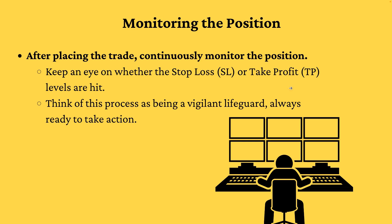Once we place the trade, we continuously monitor the position to see if our stop loss or take profit levels are hit. This is akin to being a vigilant lifeguard, always ready to take action. If Bitcoin quickly moves up to $32,025, our take profit is hit and we close the trade with a profit. If it drops to $29,890, our stop loss is hit and we close the trade to limit our losses.